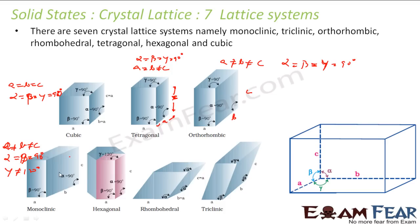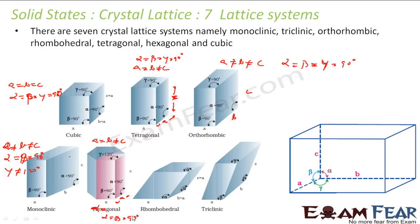In hexagonal, two sides are equal: a is equal to b, but the third side is not equal. The angles are also defined — two angles are 90 degrees and one angle is 120 degrees. So alpha is equal to beta is equal to 90 degrees, and gamma is equal to 120 degrees.